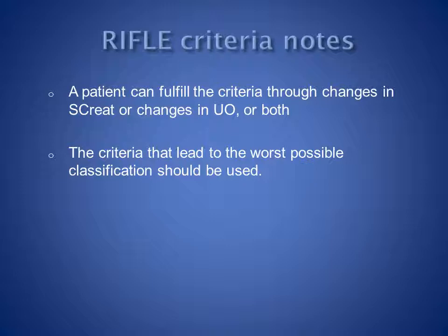Note that a patient can fulfil the criteria for acute kidney injury through changes in serum creatinine, or changes in urine output, or both. The criteria that lead to the worst possible classification should be used in deciding which RIFLE categorisation the patient falls into.